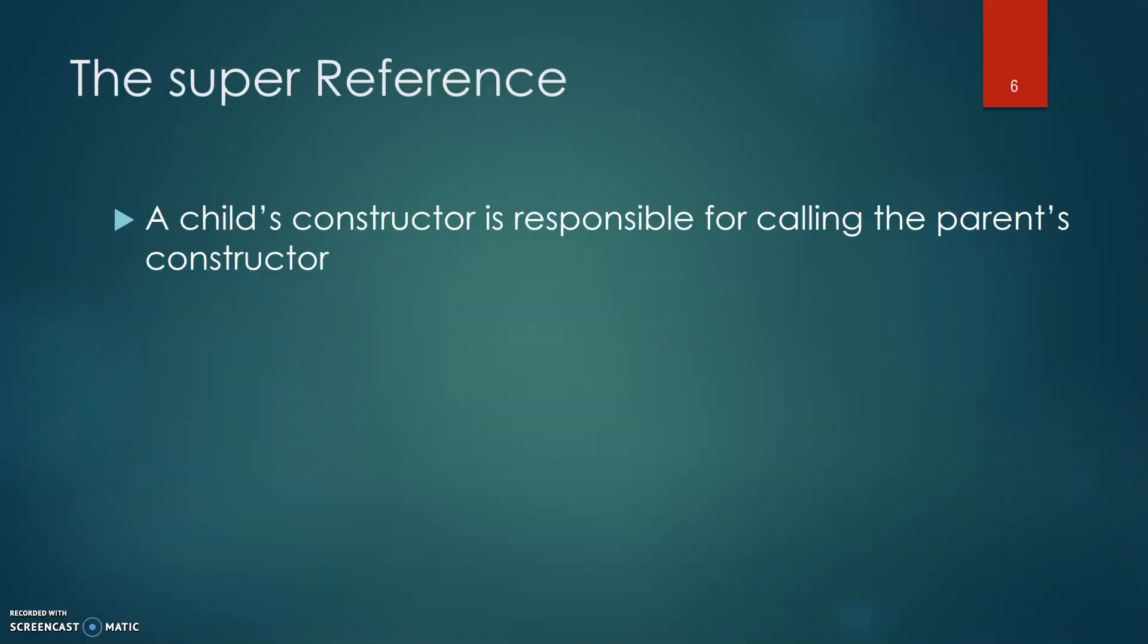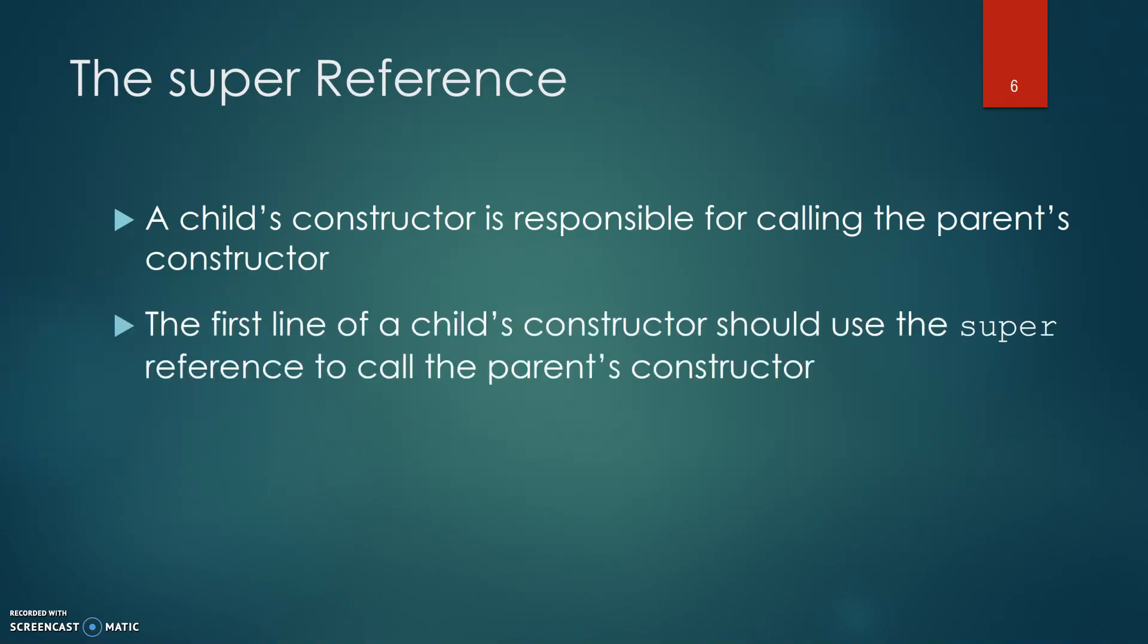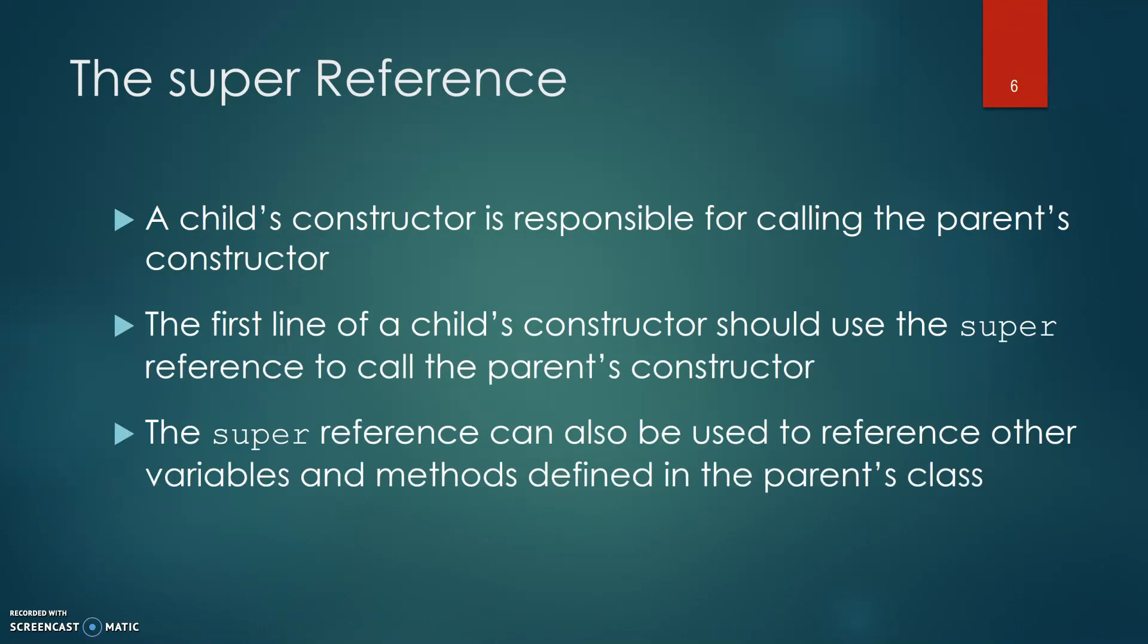A child's constructor is responsible for calling the parent's constructor. The first line of a child's constructor should use the super reference to call the parent's constructor. The super reference can also be used to reference other variables and methods defined in the parent's class.